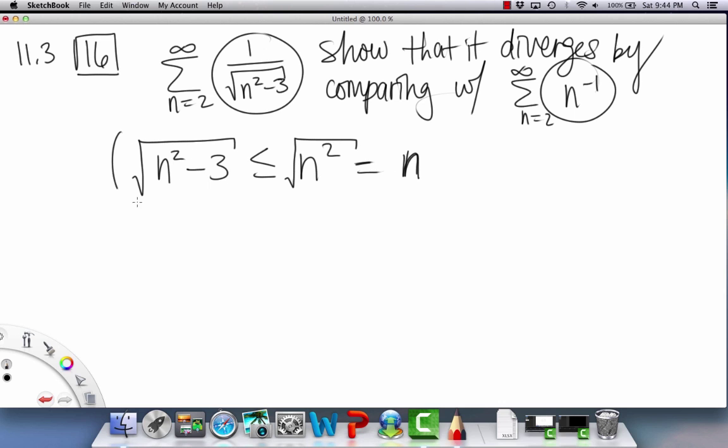So what we need to do now is raise it to the negative 1 power. Raise both sides to the negative 1 power. And here we can kind of ignore that, because this equals that. So then when you do this, this flips the sign, the inequality sign, to be greater than or equal to. So this is now 1 over square root of n squared minus 3 is greater than or equal to n to the minus 1.